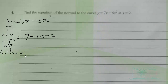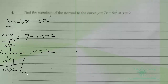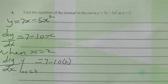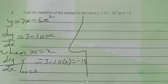When x is equal to 2, dy/dx gives us 7 minus 10 times 2, which gives us 7 minus 20, equal to negative 13. So that is the gradient of the tangent at x equal to 2.